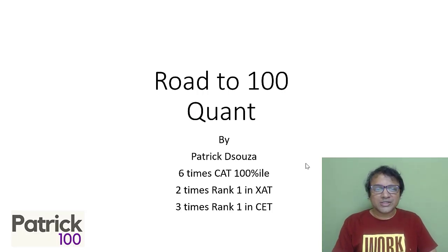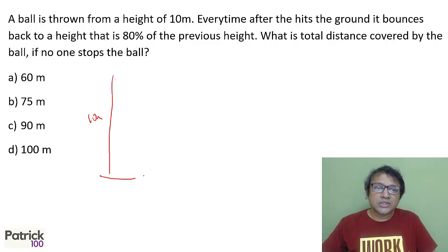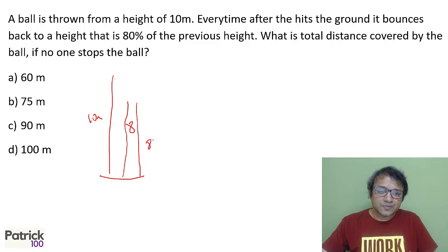Hi, welcome to Road 200 on questions. A ball is thrown from a height of 10 meters. Every time it bounces, it goes up by 80%, so 8 meters. Then it comes down 8, goes up by 80% of 8, which is 6.4 meters, and so on.